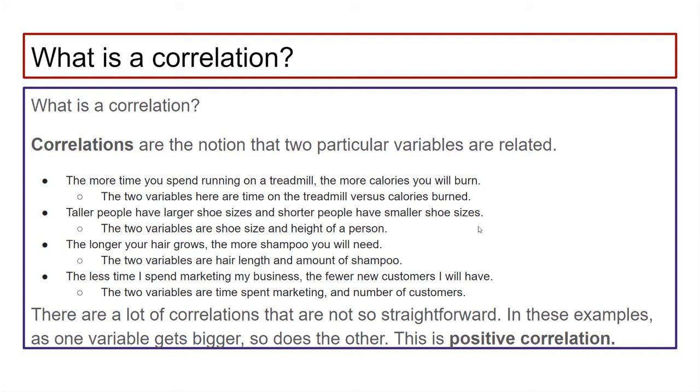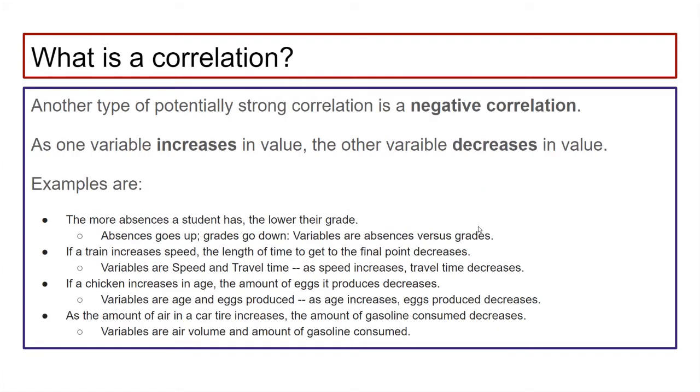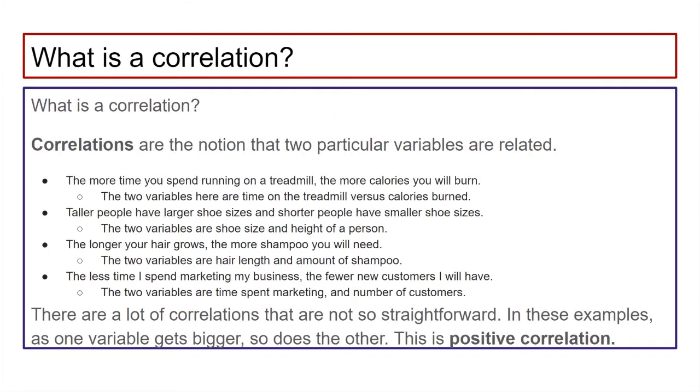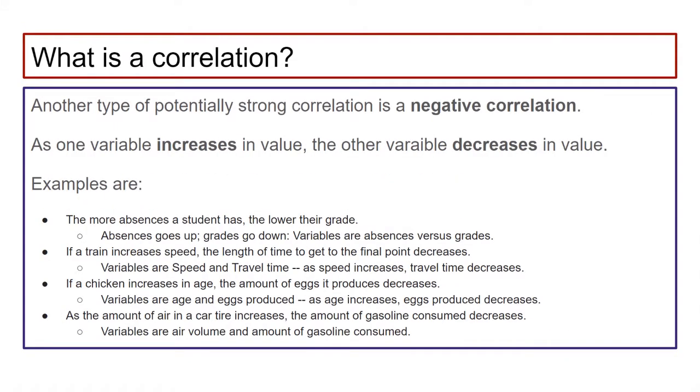These were examples of positive correlation. There are of course examples of negative correlation. That means that the bigger one of the variables gets, the smaller the other variable gets. So the more absences a student has, the lower their grade. Or if a train increases speed, the length of time to get to the final point decreases. If a chicken increases in age, the amount of eggs it produces decreases.